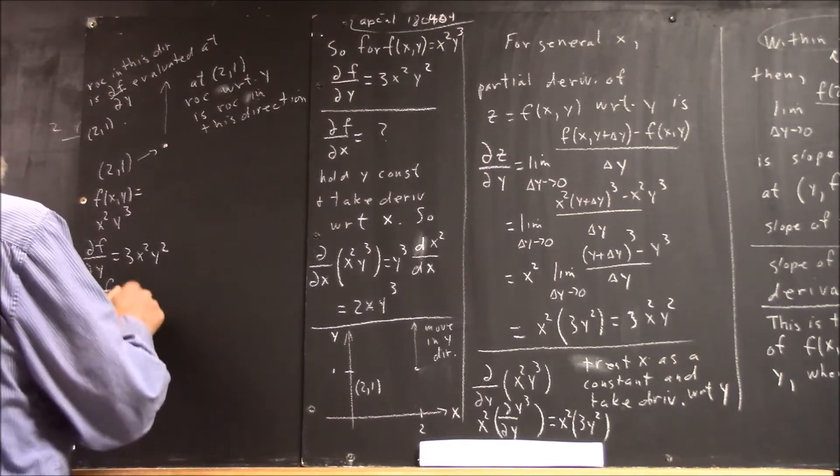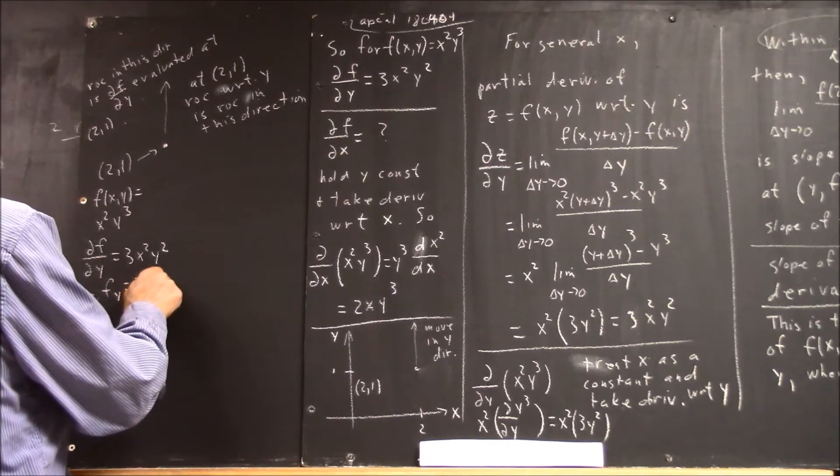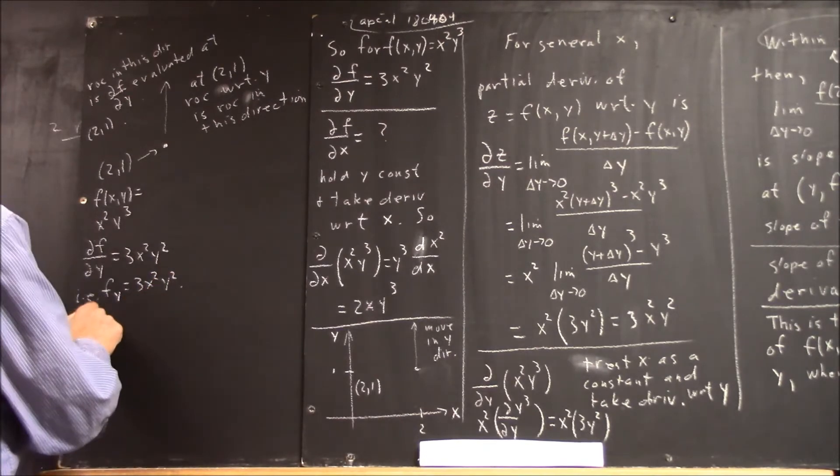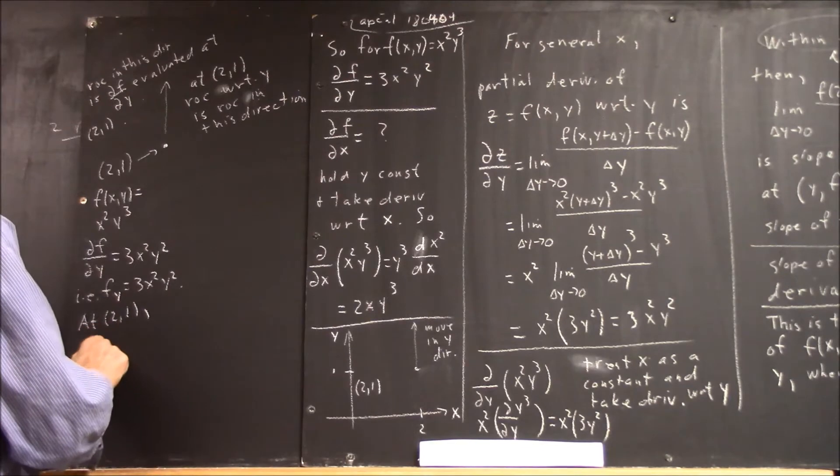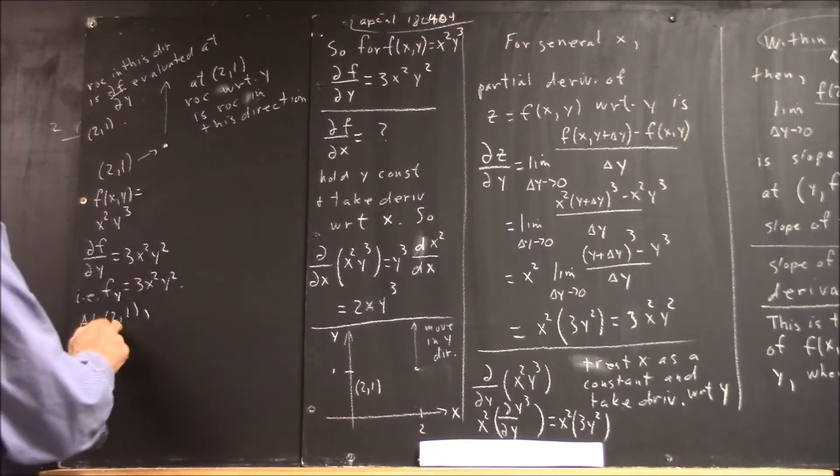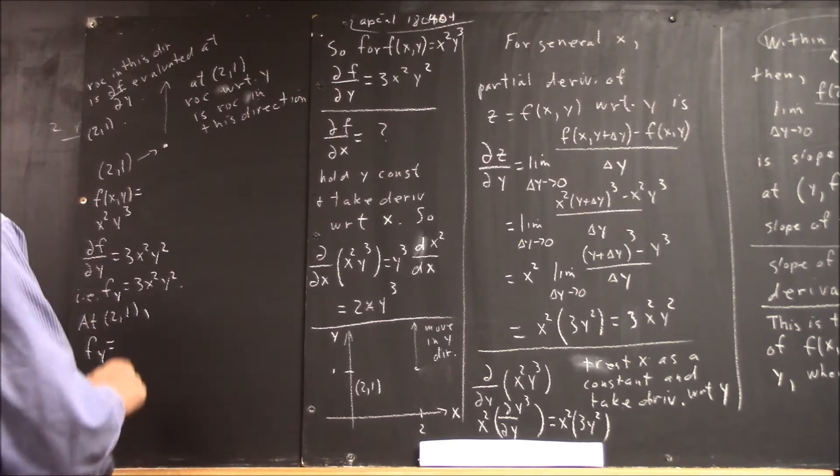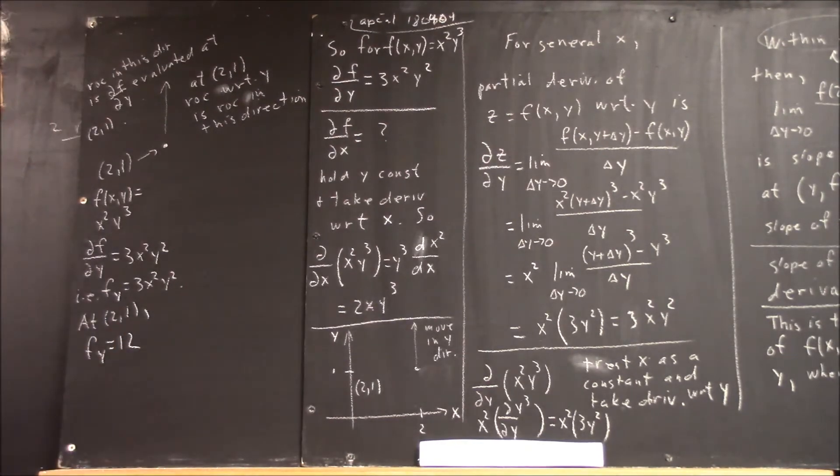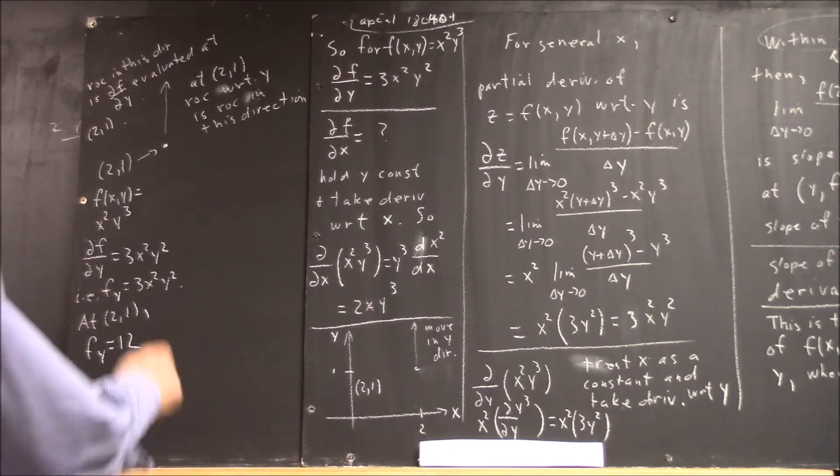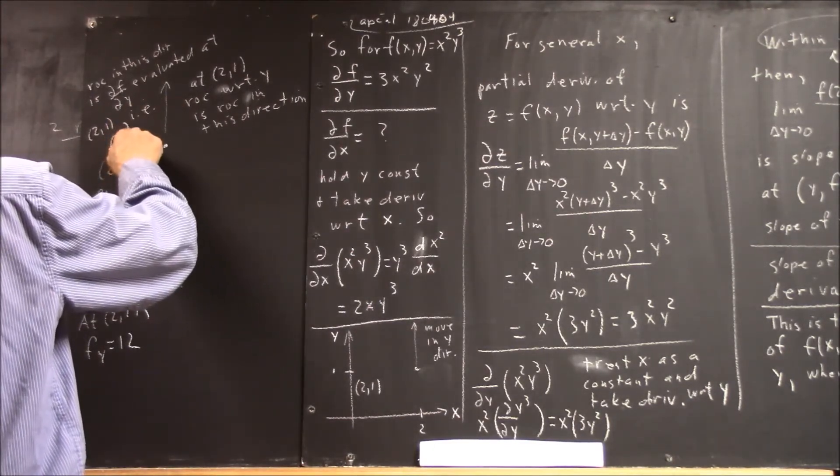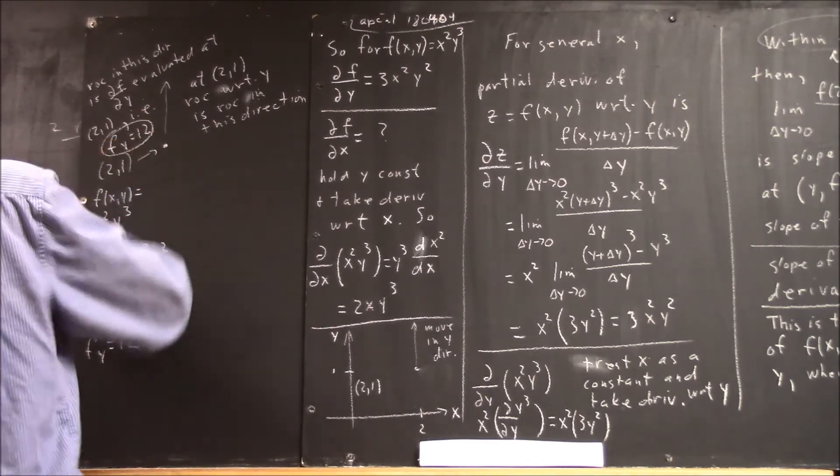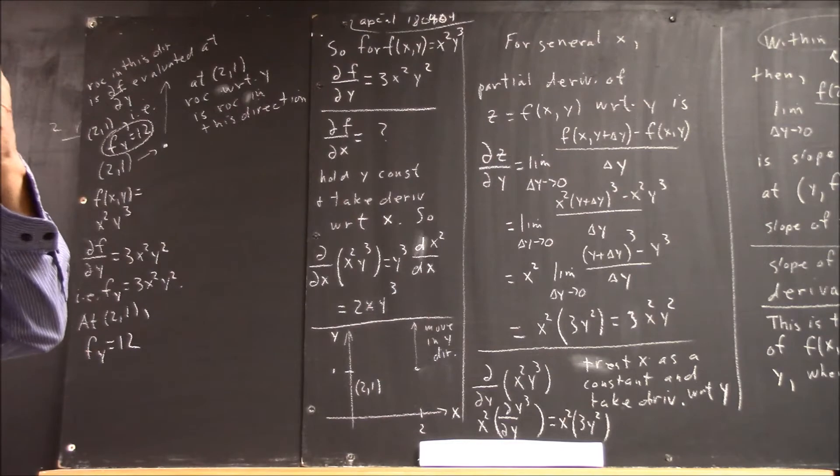At the point 2, 1, f y equals - we're getting used to that as well. That's very simple, right? So, f y equals 12.